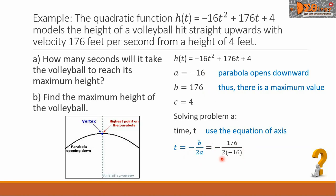Let us simplify our denominator. 2 times -16 will give -32. This negative sign here and the negative of 32 will give positive. And the quotient 176 over 32 will give 5.5. And this is the time in seconds.